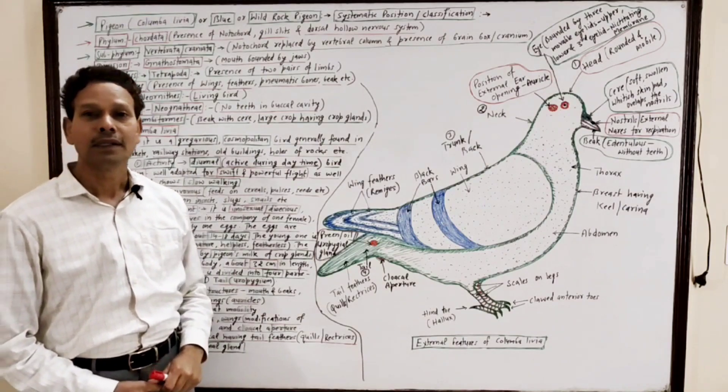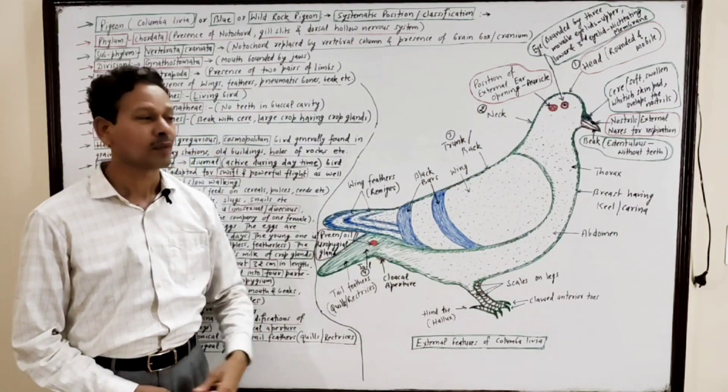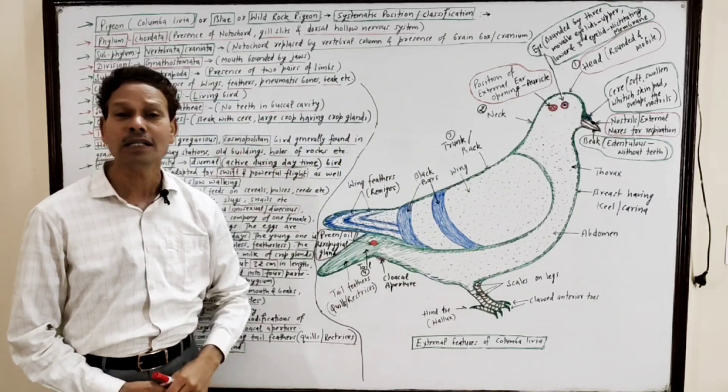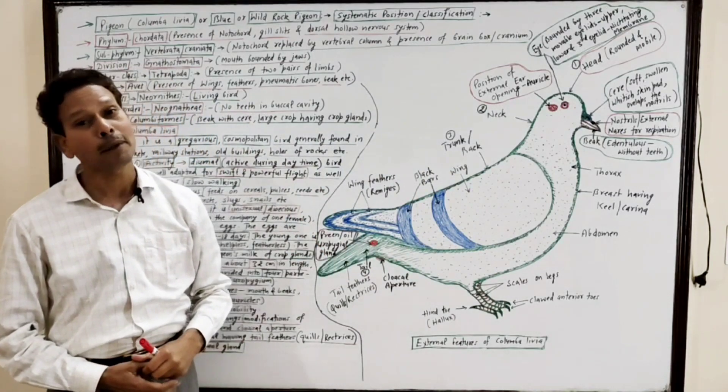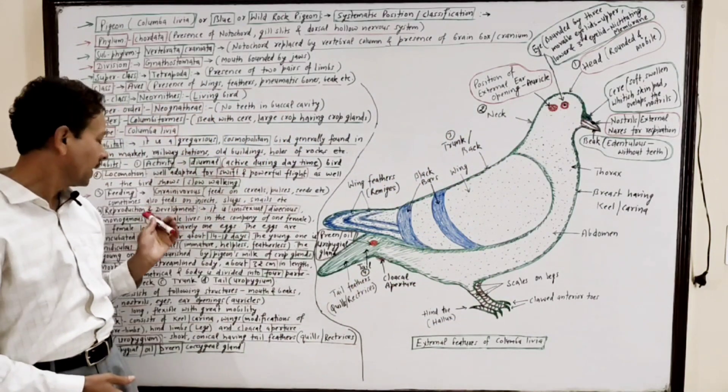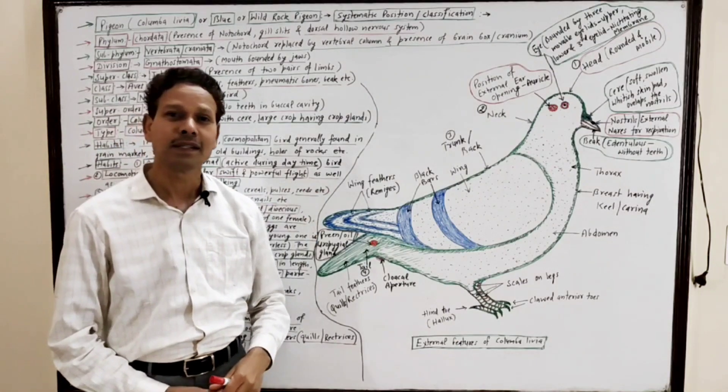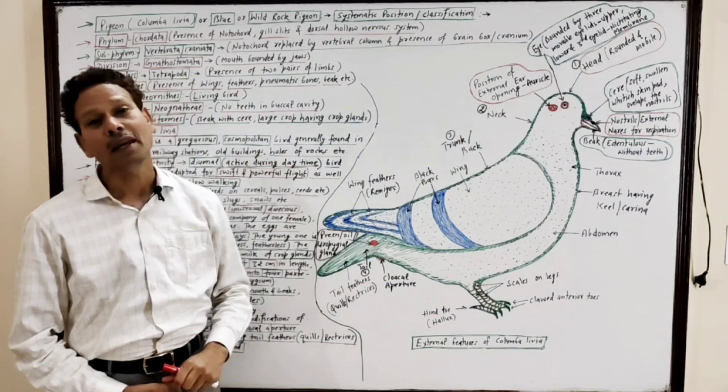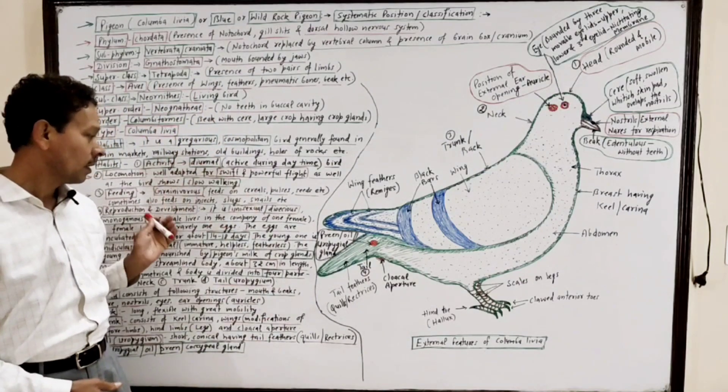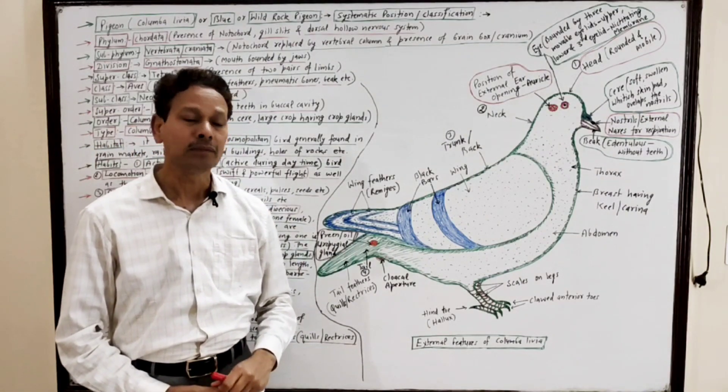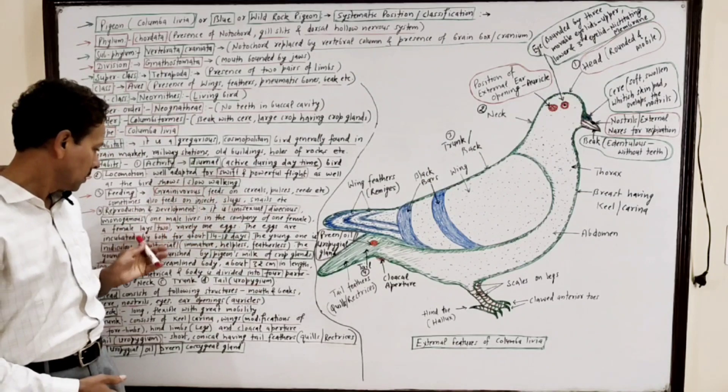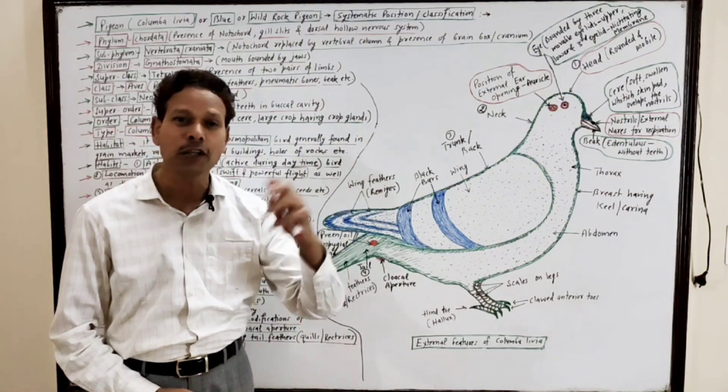Reproduction and development. The bird is unisexual, it is dioecious because both male and female sex are separate, but externally we cannot distinguish male and females. It is monogamous, meaning one male pigeon always lives in the company of a single female. Before copulation the male shows courtship behavior. Both male and female produce a crude nest.